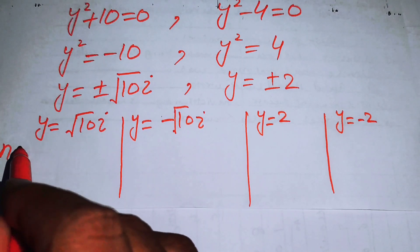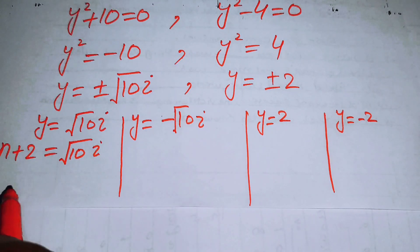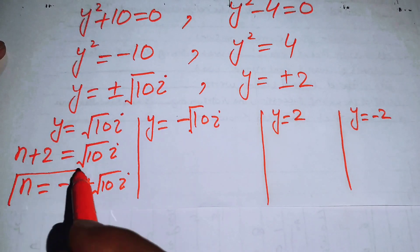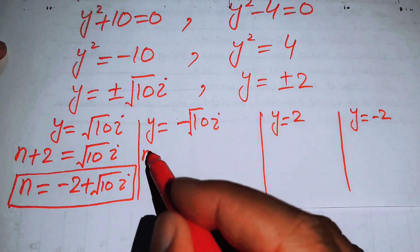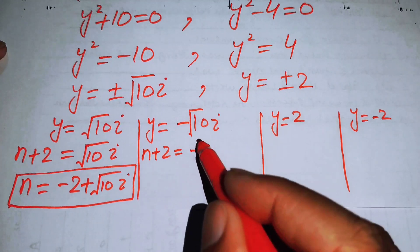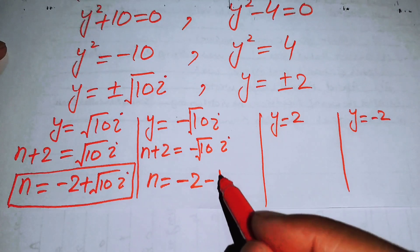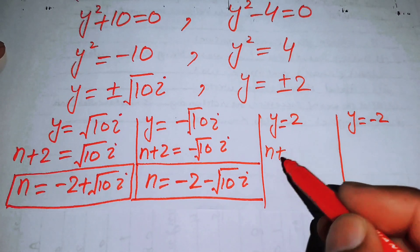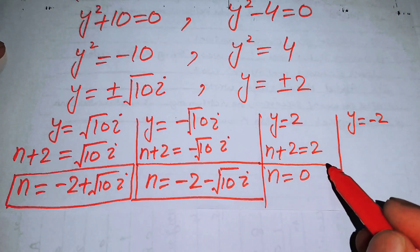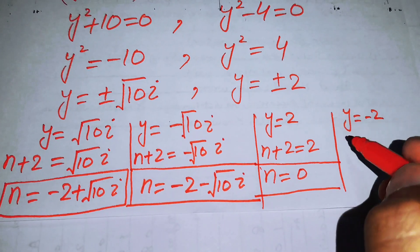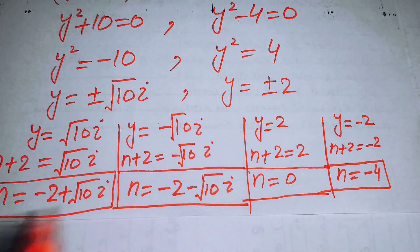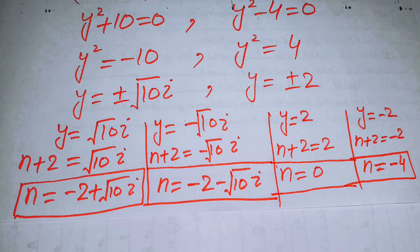Since y = n+2, we back-substitute. For y = √10·i: n = −2 + √10·i (complex root). For y = −√10·i: n = −2 − √10·i (complex root). For y = 2: n = 0. For y = −2: n = −4. These are the four final roots of the given equation.